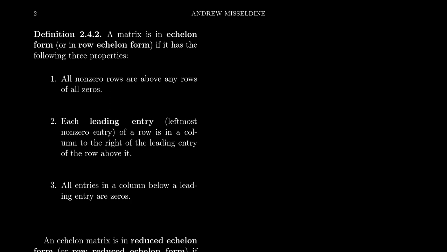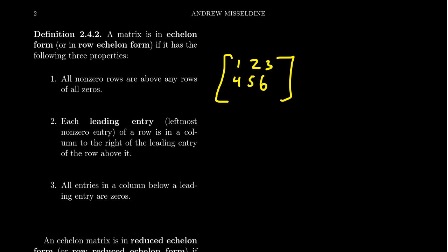For a matrix to be in echelon form, there are three conditions that have to be satisfied. The first condition is that all non-zero rows are above any rows of all zeros. Another way of saying that: if there's a row of zeros in your matrix, it's got to be on the bottom. For example, a three-by-three matrix like [1, 2, 3; 4, 5, 6; 0, 0, 0] satisfies this condition because the row of zeros is at the bottom.